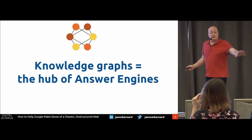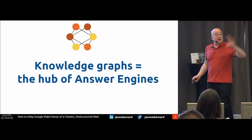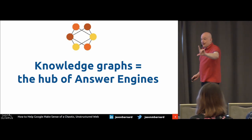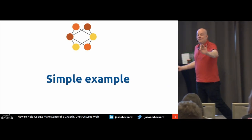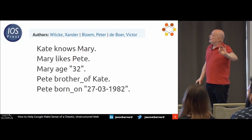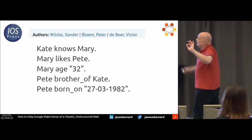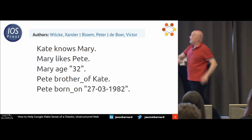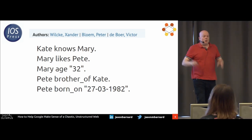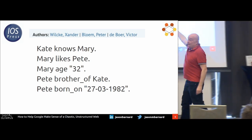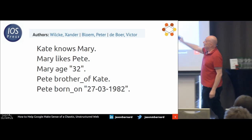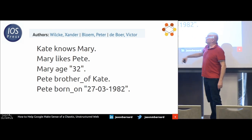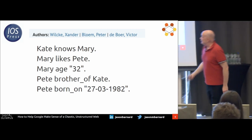Dave Davis — who isn't the guitarist from The Kinks, but actually an SEO expert who's really, really smart. Here's a simple example: Kate knows Mary. Mary likes Pete. Mary, age 32. Pete, brother of Kate. Pete, born 27/03/1982. What is that? It is people with relationships to either other people or things, and information about themselves such as their date of birth or their age.